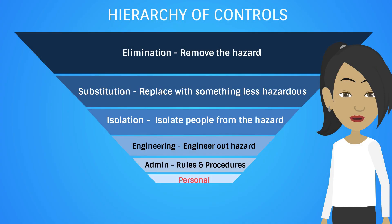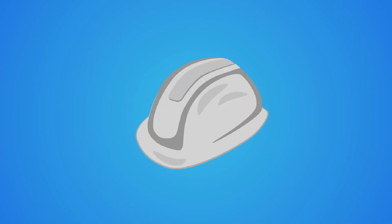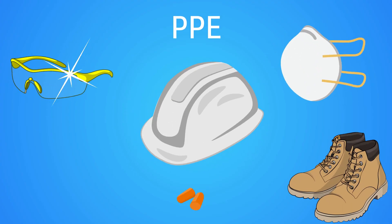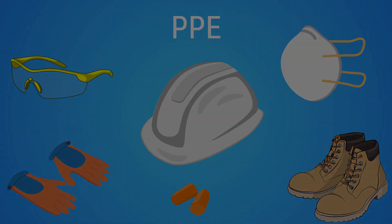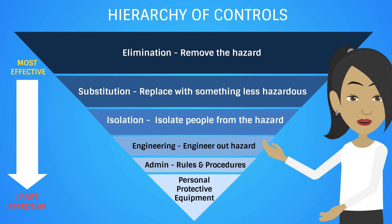Appearing last on the Hierarchy of Controls is personal protective equipment, or PPE. PPE can only lower the harmful effects of exposure to hazards without contributing to the elimination of the hazards. Therefore, PPE should always be used in conjunction with other more effective controls.